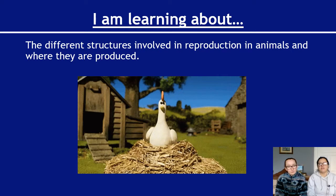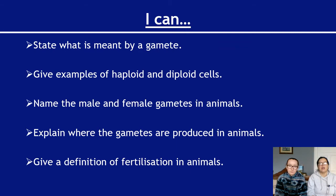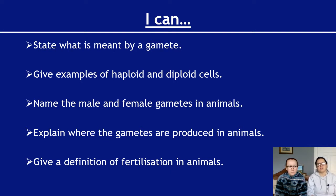We're going to cover the different structures involved in reproduction in animals and where they are produced. By the end of this video you need to be able to: state what is meant by a gamete, give examples of haploid and diploid cells — a common exam question — name the male and female gametes in animals, explain where the gametes are produced in animals, and give a definition of fertilization in animals.